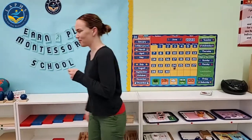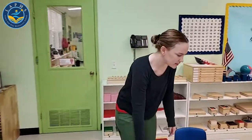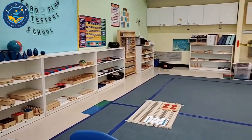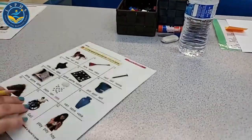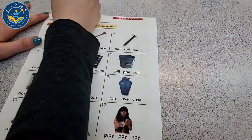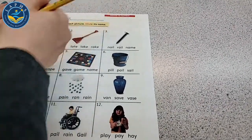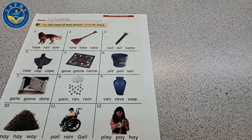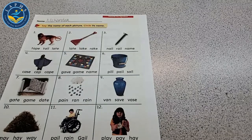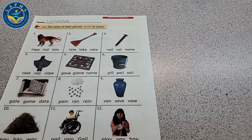Let's go do some language. Come on over. I've got all my worksheets ready, and I've got a pencil. You've got a pencil. We've all got pencils. Let's look at this worksheet first with the dog on the top. I'm going to put my name up here — Miss Kendra. The directions say, can you read the directions with me? Say the name of each picture. Circle its name.